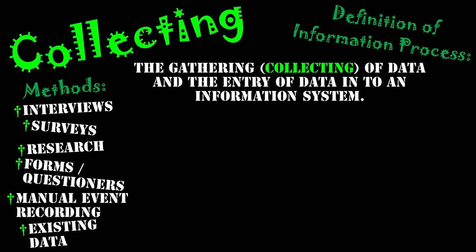And finally, we have existing data. This takes us back to that whole relationship between data and information. Existing data could be information from another system, and then we put that information as data into this information system — the cycle of one system's information being another system's data.